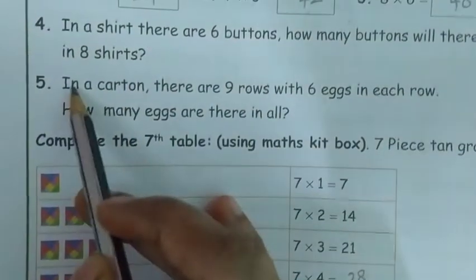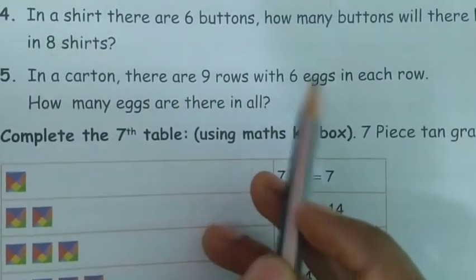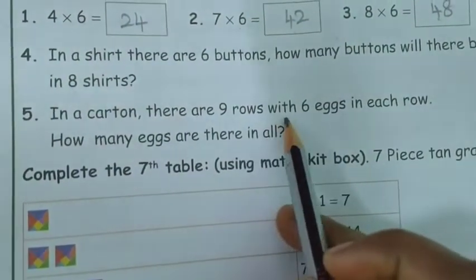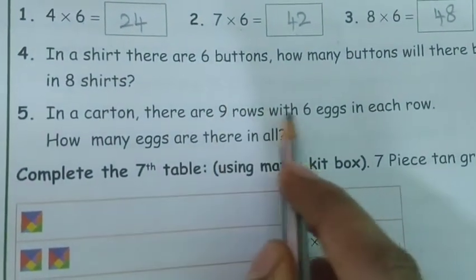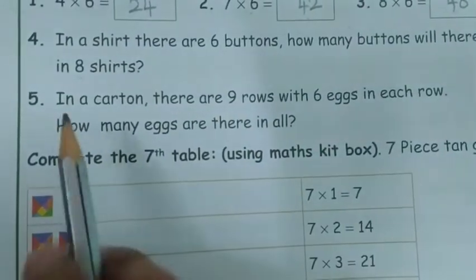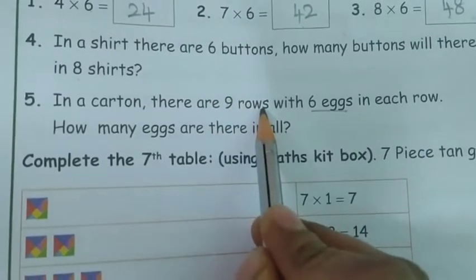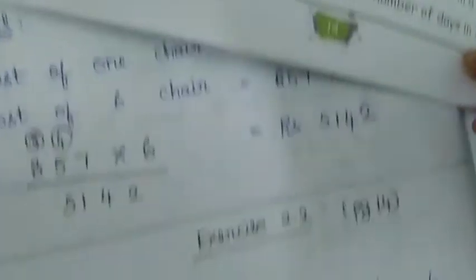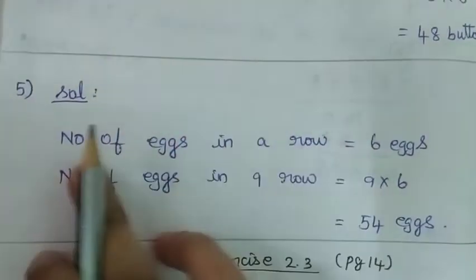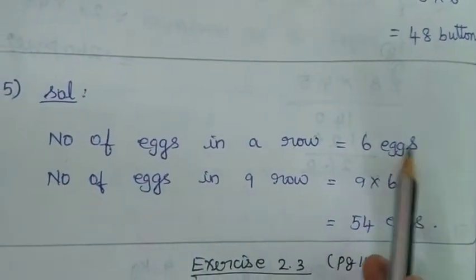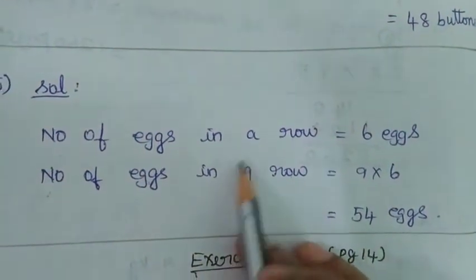Next is the fifth question. Having 6 eggs per row. We have 9 rows here. Let's take the note. Fifth question solution: number of eggs in a row — 1 row has 6 eggs. Number of eggs in 9 rows — 9 rows.